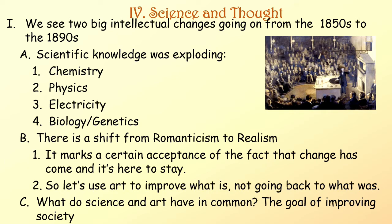We see two big intellectual changes going on from the 1850s to the 1890s. First, scientific knowledge was exploding in chemistry, physics, electricity, and — this almost gets its own big intellectual change — biology and genetics. There's also a shift from romanticism to realism, marking a certain acceptance of the fact that change has come and it's here to stay. So let's use art to improve what is, not go back to what was.